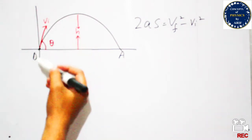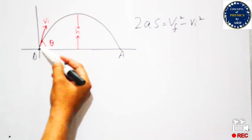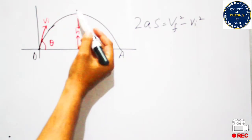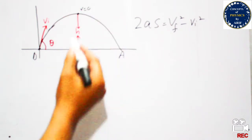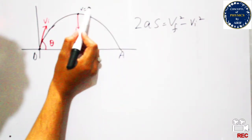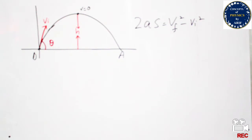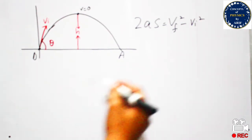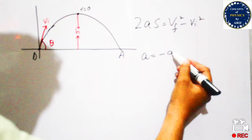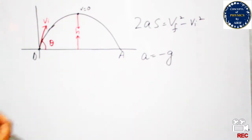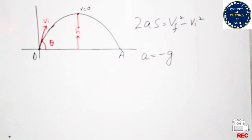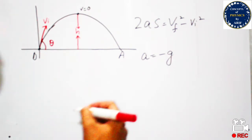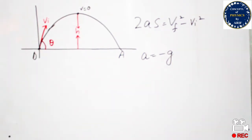So we need to find the height. When the body moves from the initial point to maximum height, it will stop — velocity will be 0 at that instant. Initial velocity will be Vi, and acceleration will be minus g because it is moving upward against gravitational pull. That is why we apply minus g.